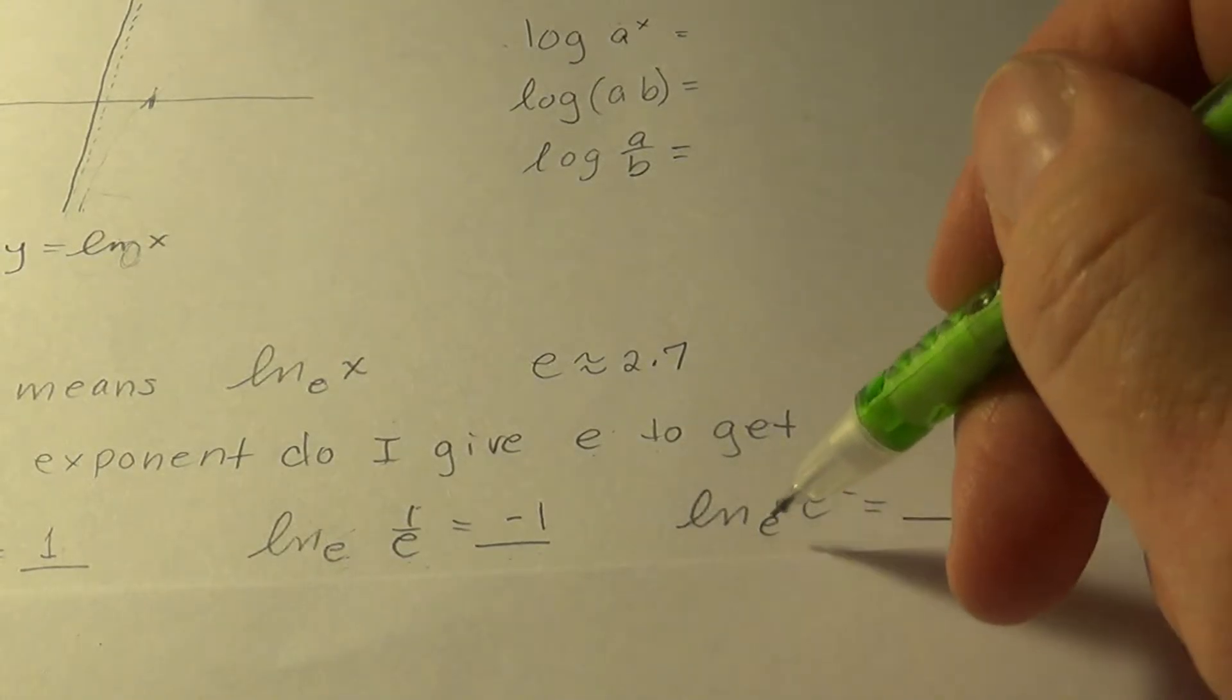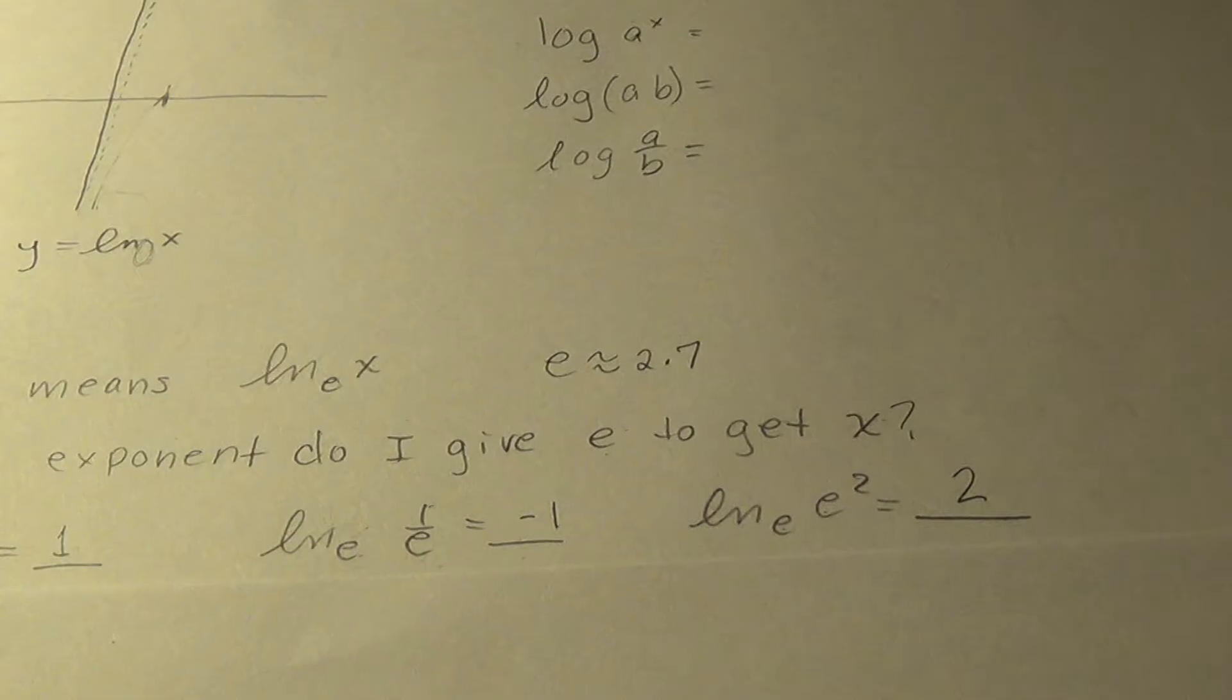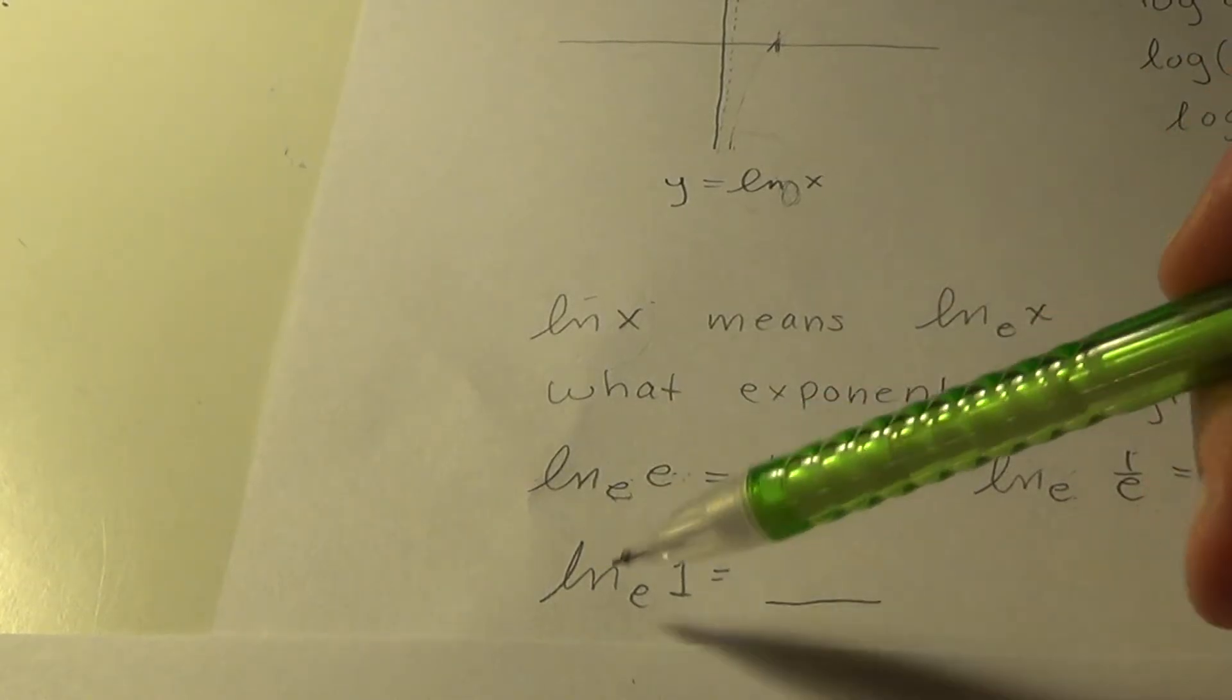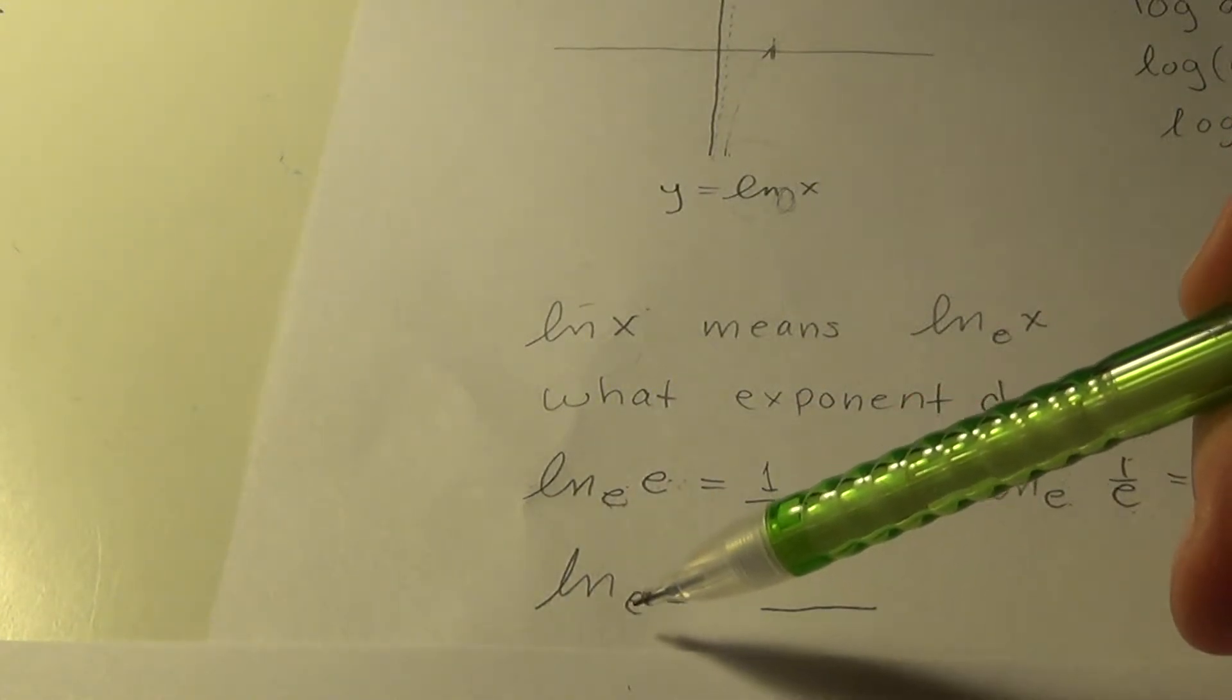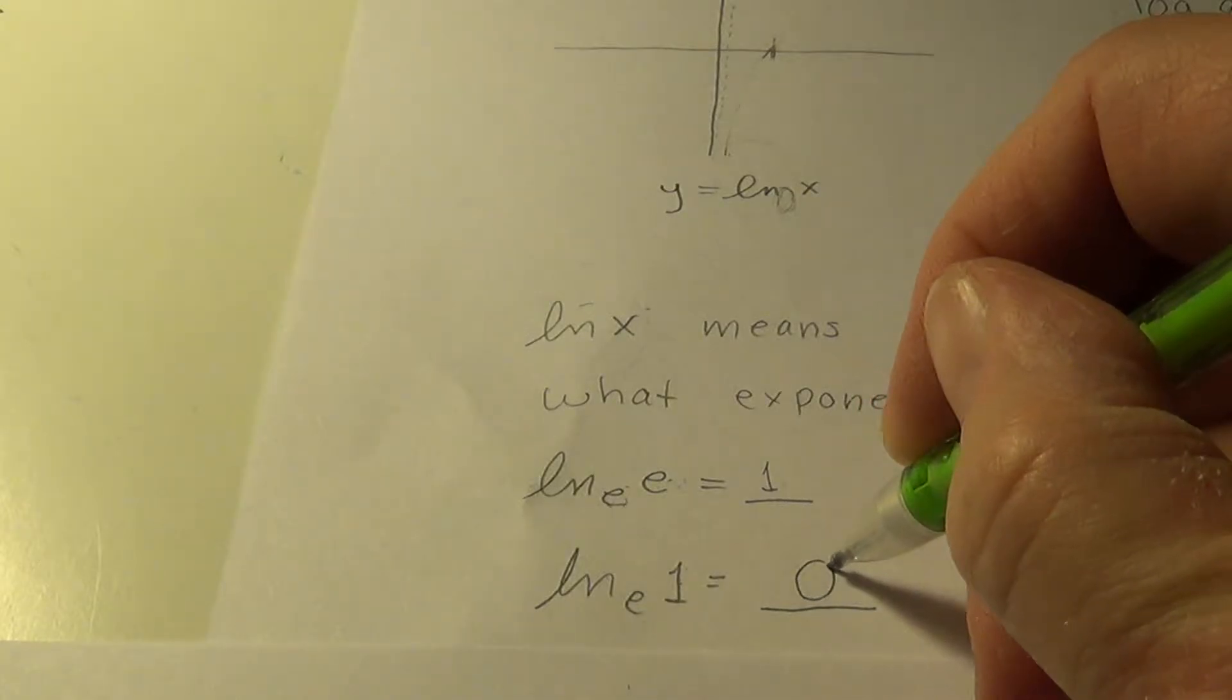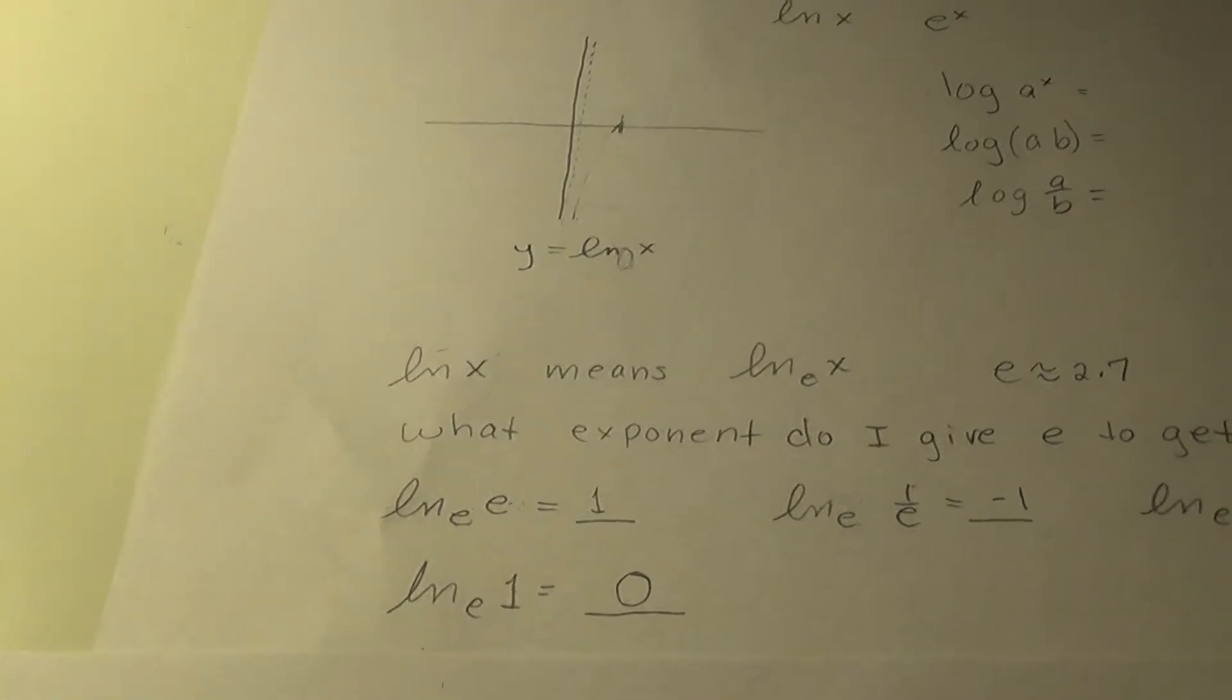And over here, what exponent do I give e to get e squared? One more important one. Can you figure it out, or remember it? What's the ln of 1? The exponent I give e to get 1. The exponent I give anything to get 1 is 0. Anything to the 0 is 1.